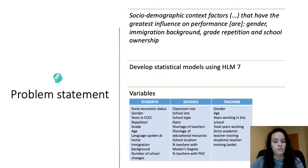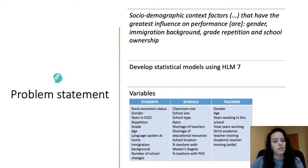We start our research from the premise that the sociodemographic context factors that have the greatest influence on performance are gender, immigration background, grade repetition, and school ownership. To test whether this is true or not, we developed one multilevel statistical model for each competence studied: reading, science, and maths. The variables we are going to include in this analysis are shown in a table, separating variables for students, schools, and teacher characteristics.